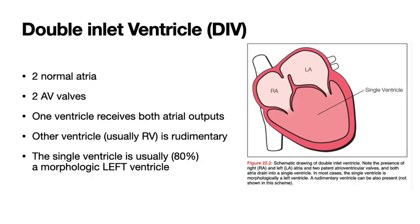Let's start with Chapter 22: double inlet ventricle. With double inlet ventricle, you start off with two normal atria and there are two AV valves. But one ventricle receives both atrial outputs. The other ventricle is usually just rudimentary — meaning basic or barely formed. What you've got is a very tiny ventricle that doesn't really count, and two normal-sized atria both emptying into that univentricle.